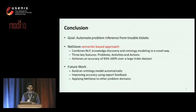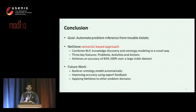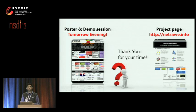Let me summarize. Our goal was to analyze the natural text inside trouble tickets to infer useful information for improving network management. Towards this goal, we have built NetSieve that takes a semantic-based approach, using natural language processing, knowledge discovery, and ontology modeling in a novel way to extract three key features: problems, activities, and actions. We have evaluated NetSieve on a large ticket dataset and overall our results are encouraging. Taking a step back, we are scratching the surface — our aim is to motivate the research community to work on these unexplored yet important datasets. Future work includes building an ontology model automatically and improving accuracy using expert feedback. I'd like to conclude my talk and I'd be happy to take questions. We have a demo set up tomorrow evening — I encourage you to visit it.